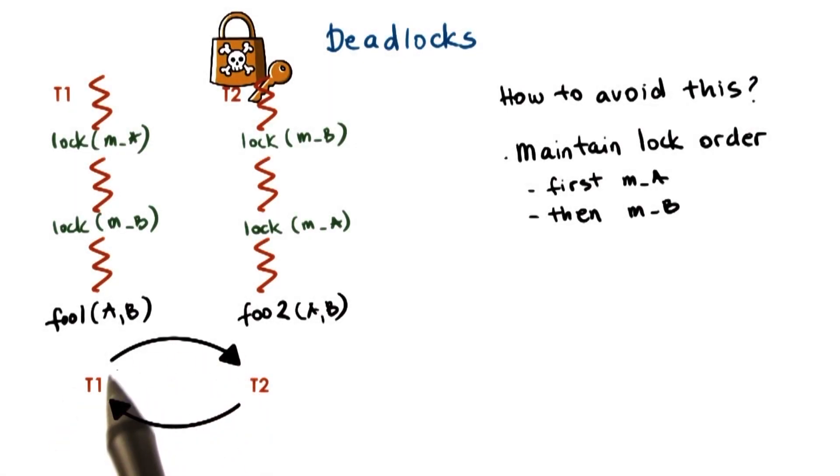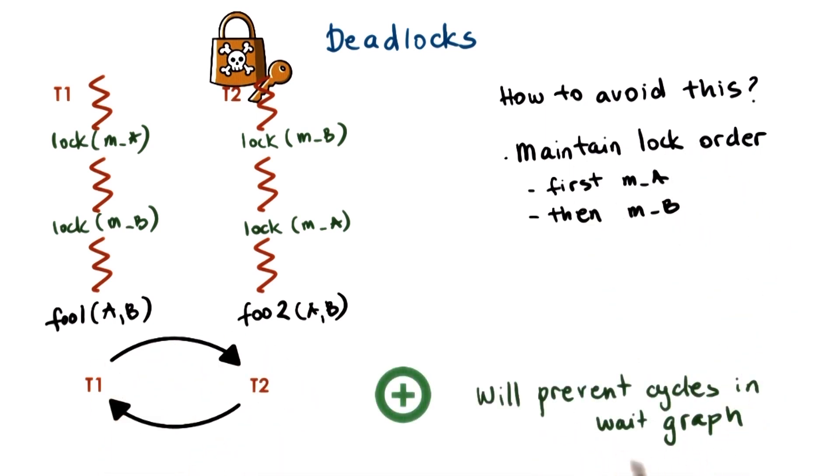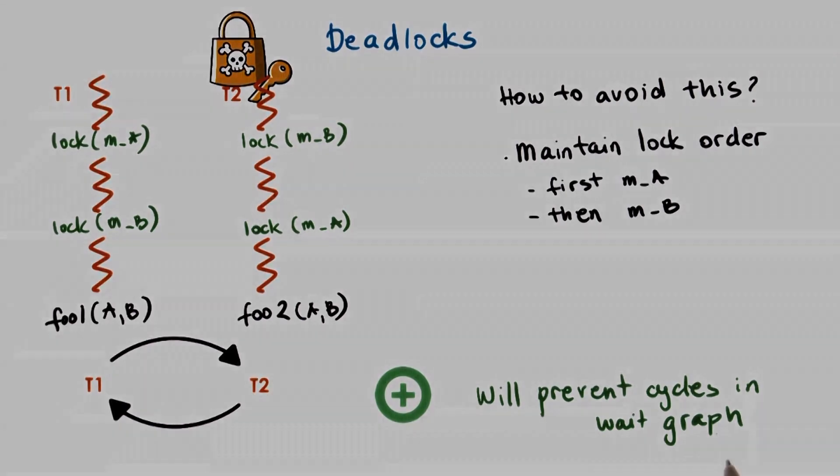In this kind of wait graph in which we draw a line between two threads if one thread is waiting on a resource that the other thread has, then a cycle indicates a deadlock. Maintaining a lock order will prevent such cycles from occurring.